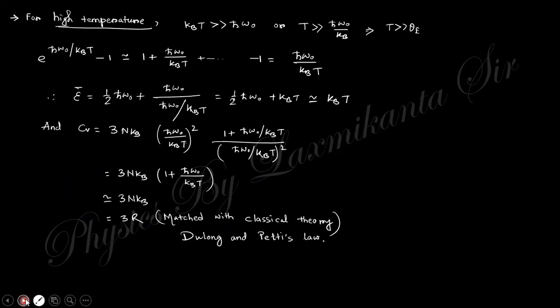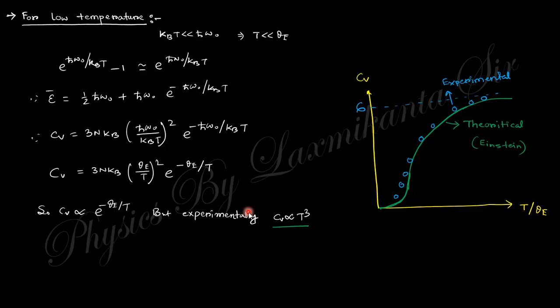For high temperature, if you consider, then the expression will be 3R, which satisfies the Dulong-Petit law. For low temperature, you obtain this type of expression. In case of high temperature, this matches with experimental value, but in low temperature it does not match with the experimental value. This was actually corrected by Debye, where we take the velocity distributed in longitudinal and transverse as well. Einstein did not distinguish them, so after distinguishing these, experimental and theoretical more or less match.